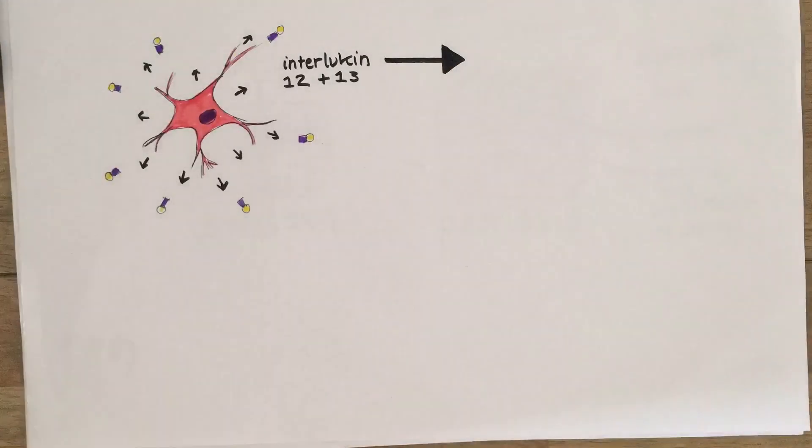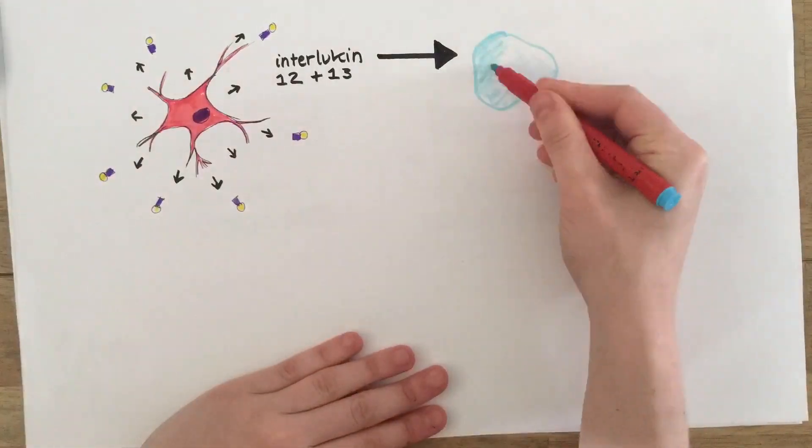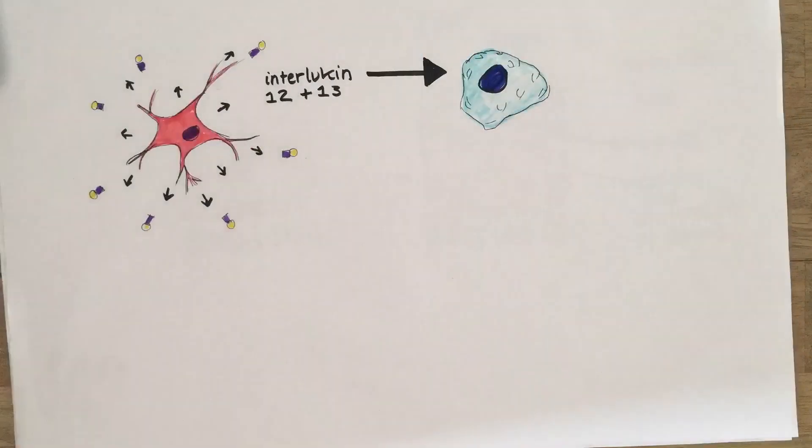Interleukin 12 acts on TH1 cells, causing them to produce interferon gamma and TNF-alpha.